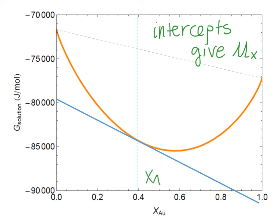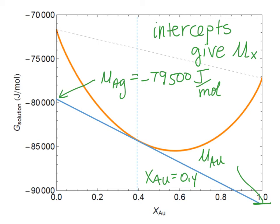So at XAU equals 0.4, we can find on this side mu AG and just read it off of there directly. So it's just about, let's see, negative 79,500 joules per mole. And down here, this value is mu AU. And we find that to be, I guess, maybe negative 91,000 or so joules per mole.